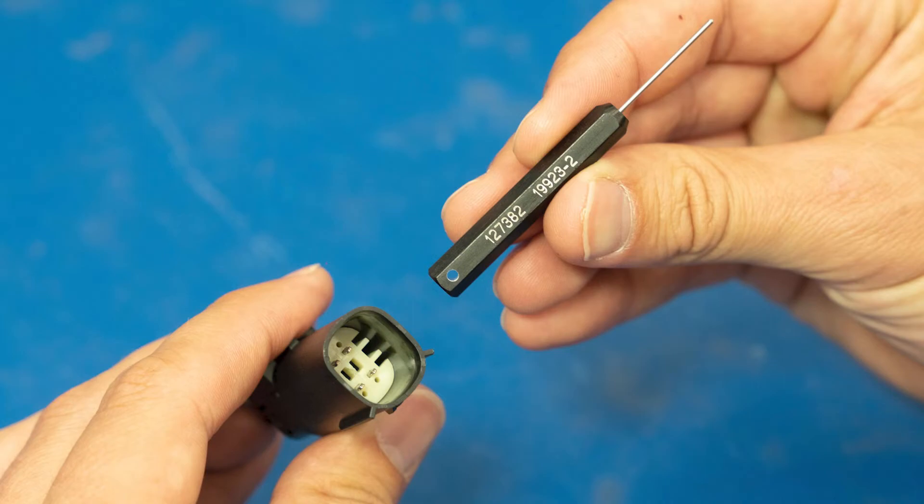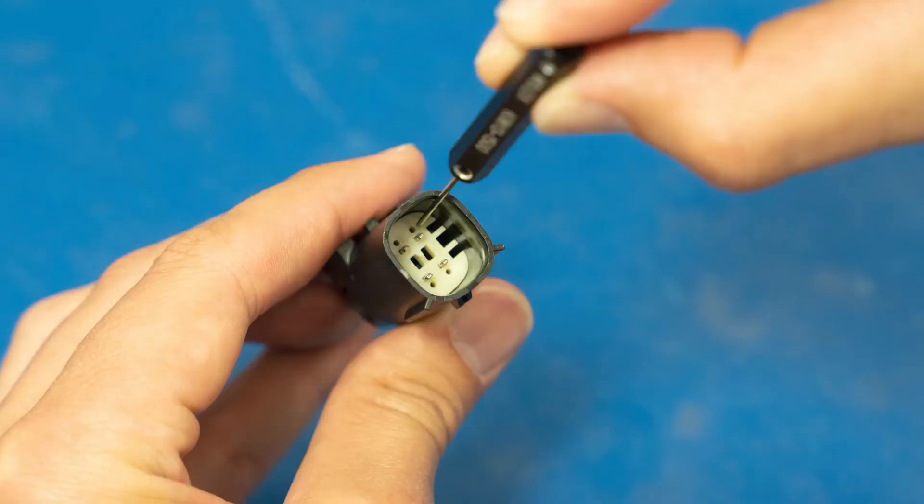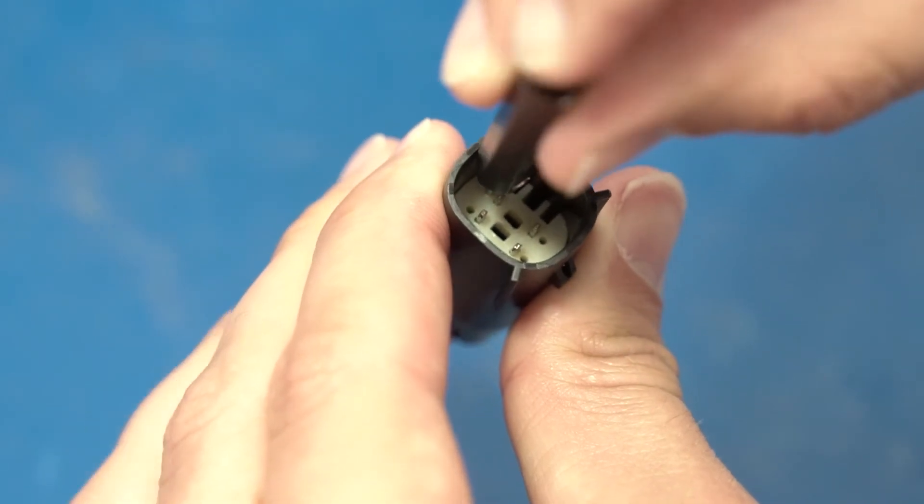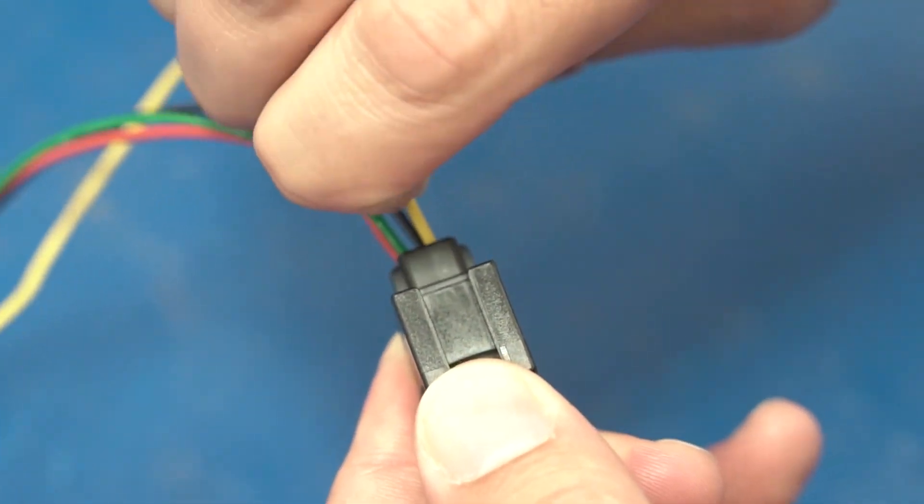If available grab the tool marked as shown or alternately use a paper clip. Press the tool straight down until you hear a clicking sound. Now you should be able to remove the wire.